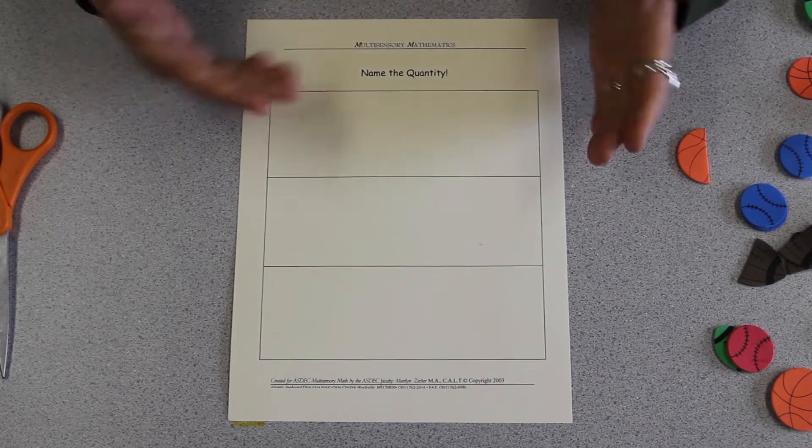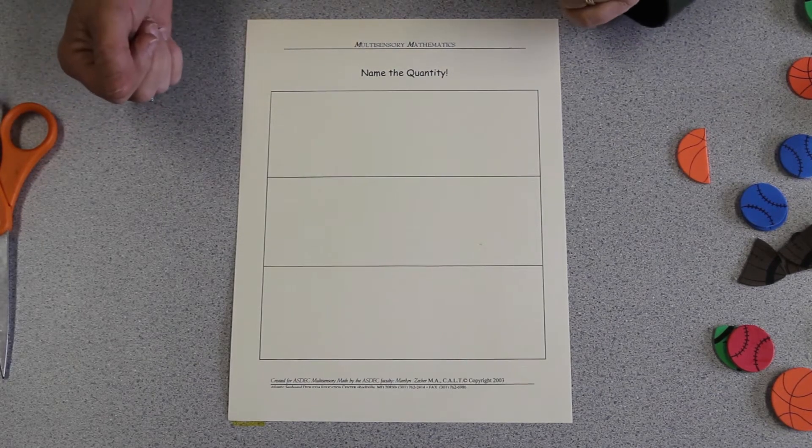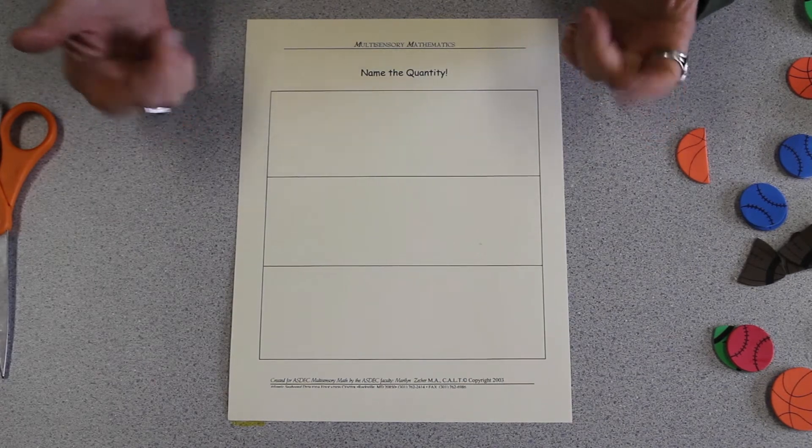In this case, we're going to be talking about fractions, mixed numbers, and improper fractions. And we're going to ask the student to try to be able to name it without counting and to make the concept really clear.